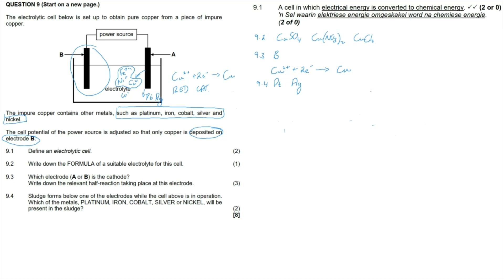When marked according to the marking guidelines, this question is fairly straightforward. Two marks are awarded for the definition — electrical energy converted into chemical energy is electrolysis. A suitable electrolyte is any soluble copper salt. For identifying electrode B as the cathode, reduction takes place there, and the half-reaction must be written as only a forward reaction for two marks. Finally, two marks are split between the two metals that form the sludge: platinum and silver, one mark each.